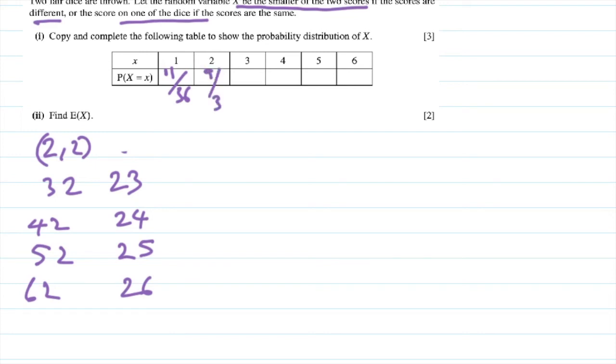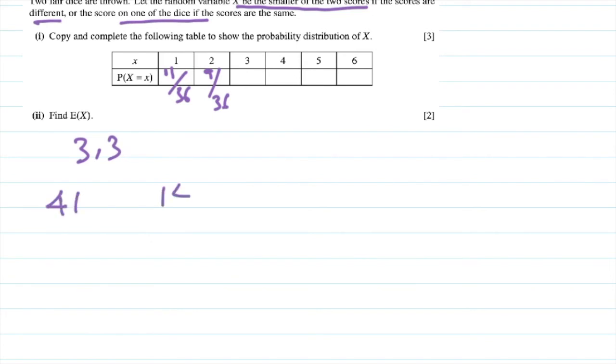Next, the lowest score is three. So the same score, which is three-three, then four-three, three-four, five-three, three-five, six-three, three-six. That's seven over thirty-six.